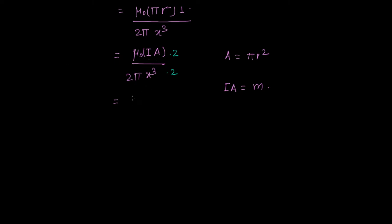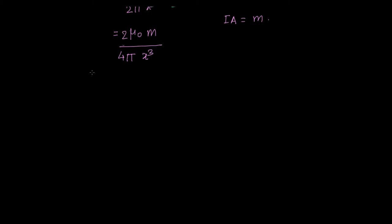So my m is in the same direction as the field. If I replace this, it is twice mu naught m upon 4 pi x cubed. In vector notation, B becomes 1 upon 4 pi times 2 mu naught m upon x cubed, since m and B are in the same direction.